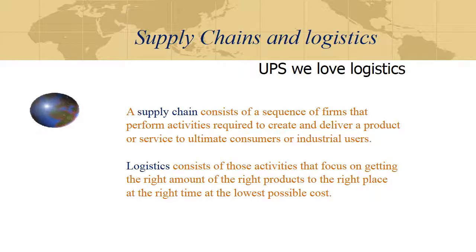A supply chain consists of a sequence of firms that perform activities required to create and deliver a product or service to the ultimate consumer or industrial users. Think about the supply chain that Walmart has behind them — somebody in the middle of Ohio pickles cucumbers and turns them into pickles.